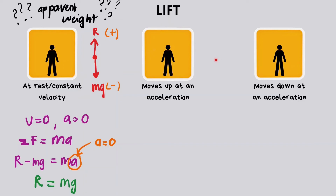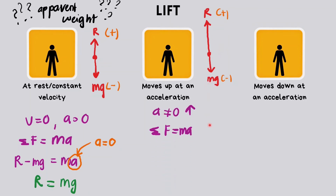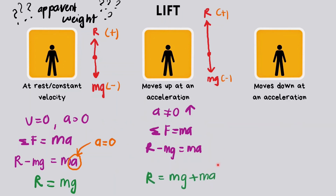When the lift is moving upward at an acceleration, the resultant force is upwards. Applying Newton's second law with R positive and mg negative, and since acceleration is not equal to zero, when we rearrange the equation we get that the apparent weight R is increased by Ma. So the person feels heavier when the lift accelerates upward.